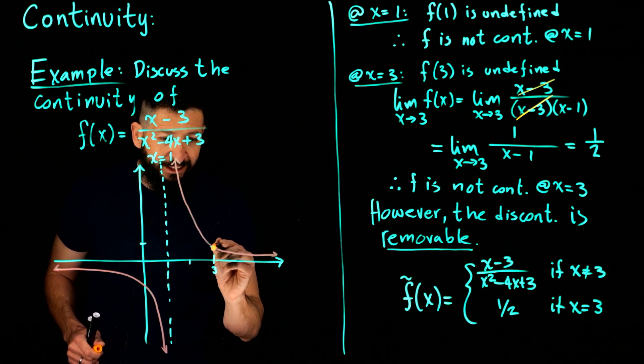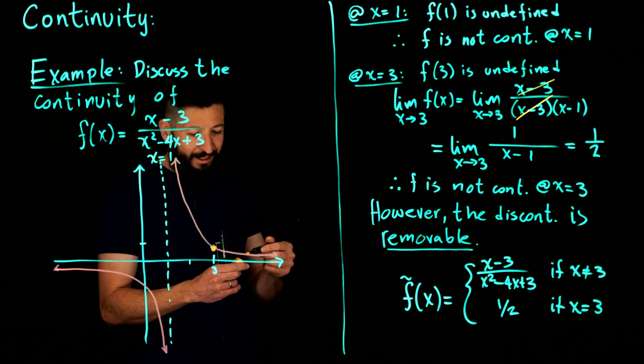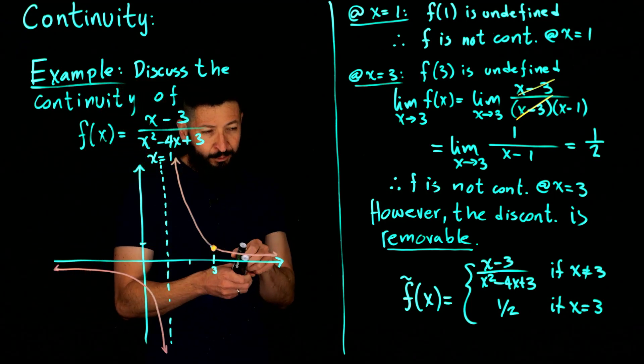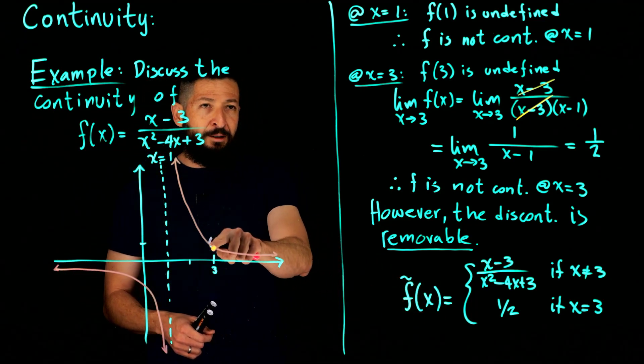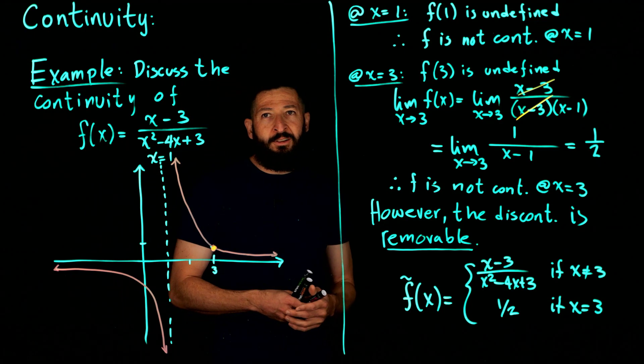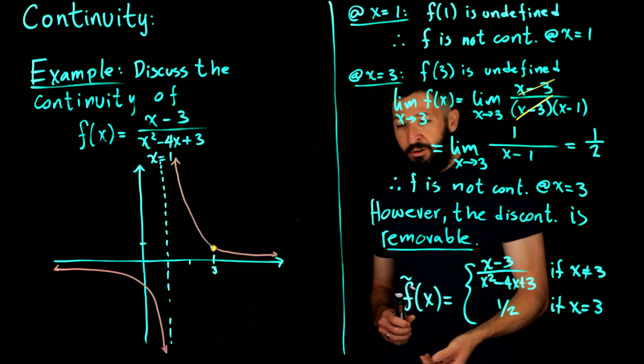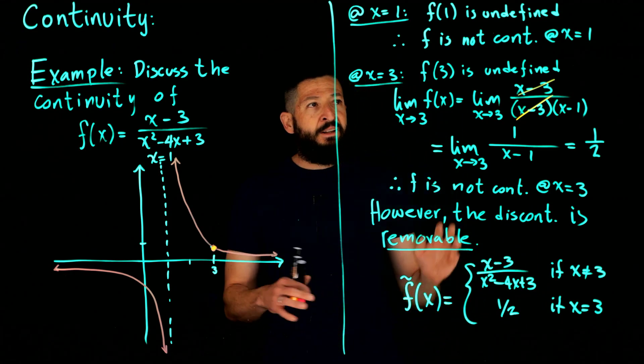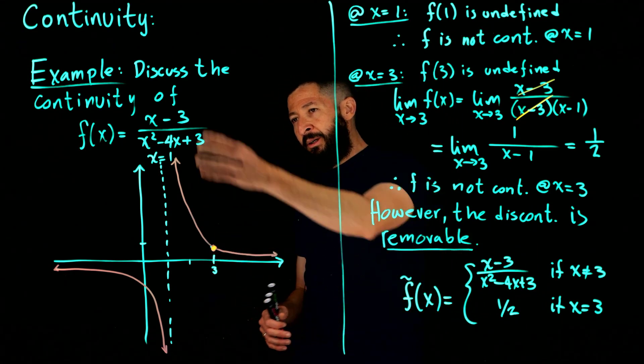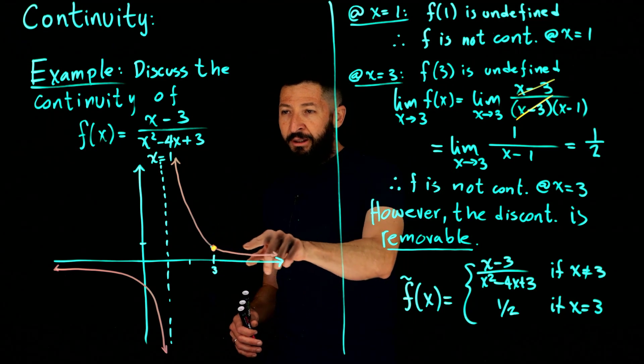So you basically are removing that discontinuity and forcing the function to take this value. The function was not taking a value, but you're forcing it to take that value there, and that would no longer be the graph of f of x, would be the graph of f tilde, but it'd be continuous at that point. So you're removing that discontinuity by redefining the function, given that you did have the limit exist. So that is the difference between an essential discontinuity and a removable discontinuity.